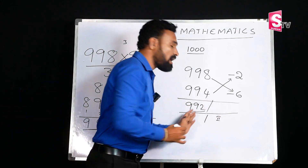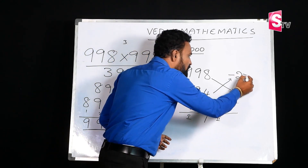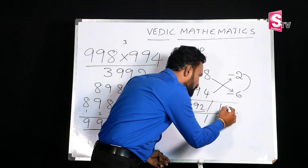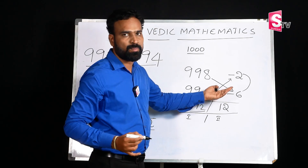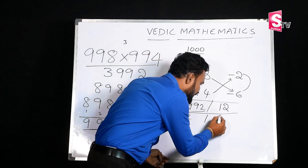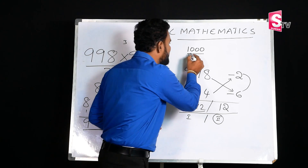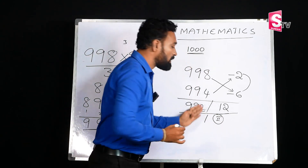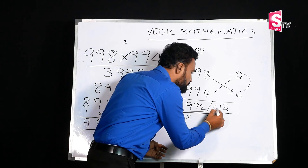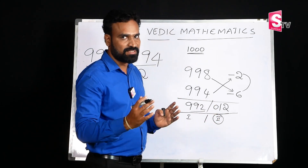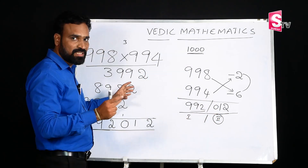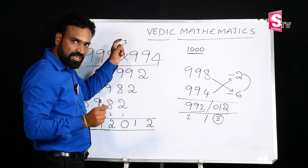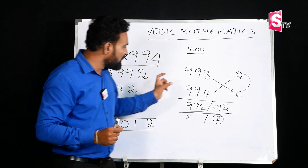Next, for the second part, we do multiplication. What is 2 times 6? 2 times 6 is 12. Since minus times minus gives plus, the second part of the answer is 12. Since we have 3 zeros in the base 1,000, we need 3 digits. If we have only 2 digits, we add a leading zero. So the answer is 992012.